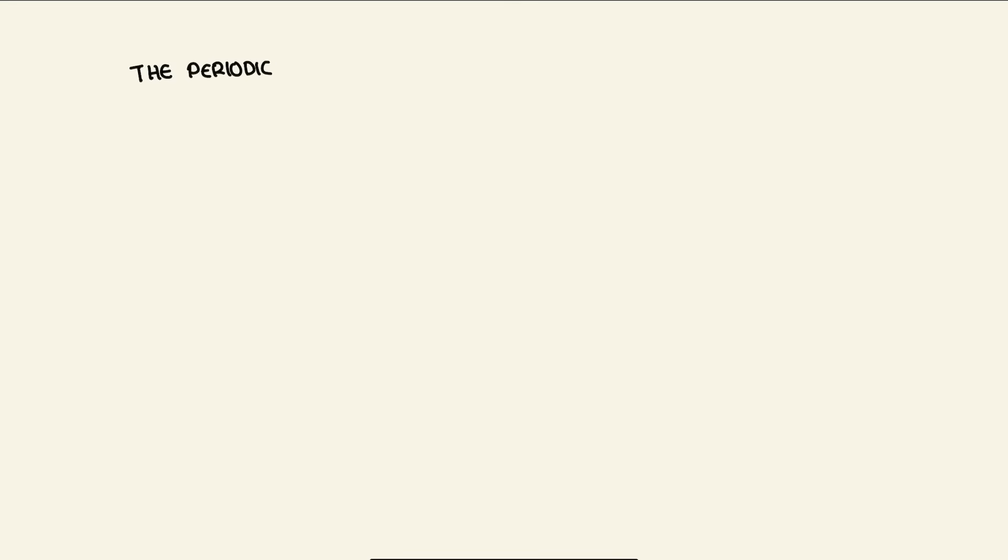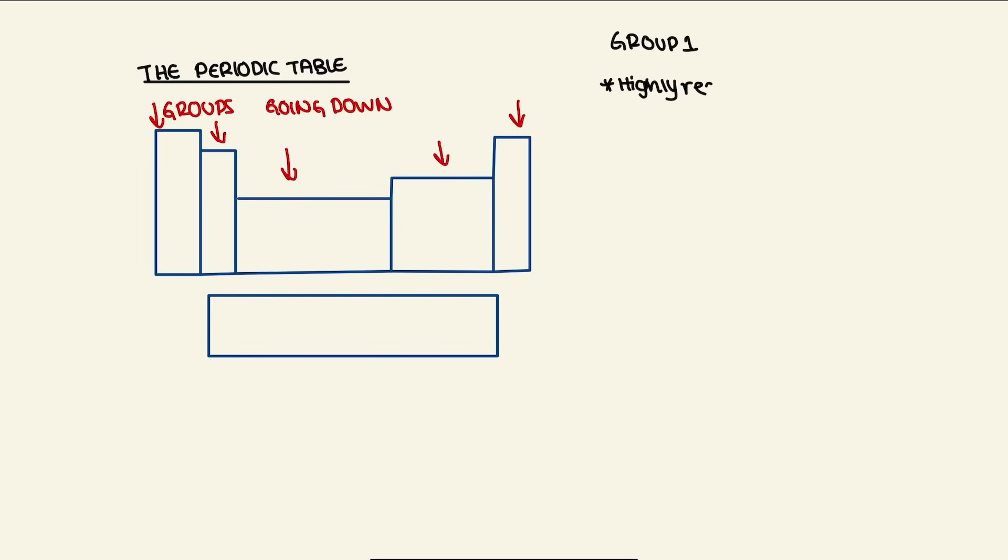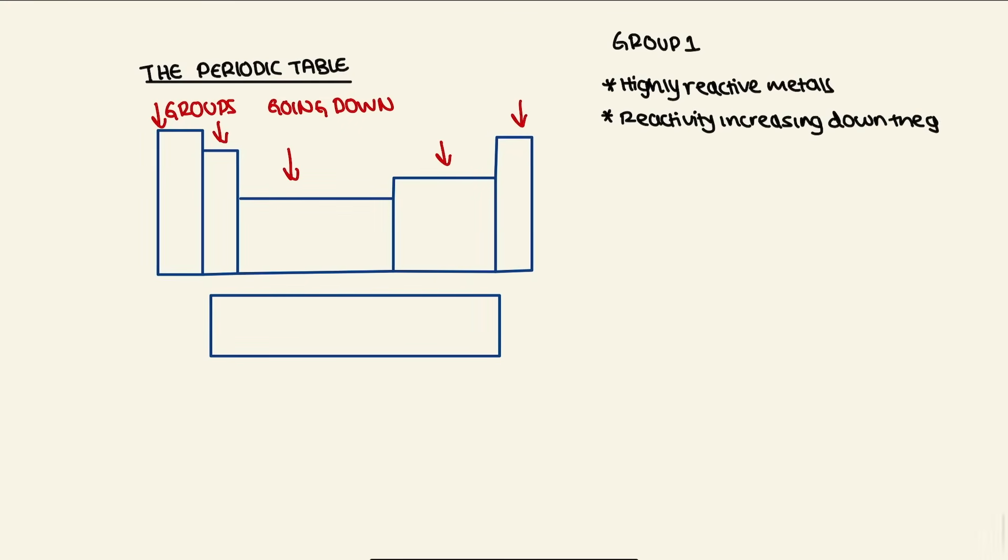When talking about the periodic table, we need to look at the group trends. Group 1 are highly reactive metals, with reactivity increasing down the group. They react vigorously with water, producing alkaline solutions and hydrogen gas.